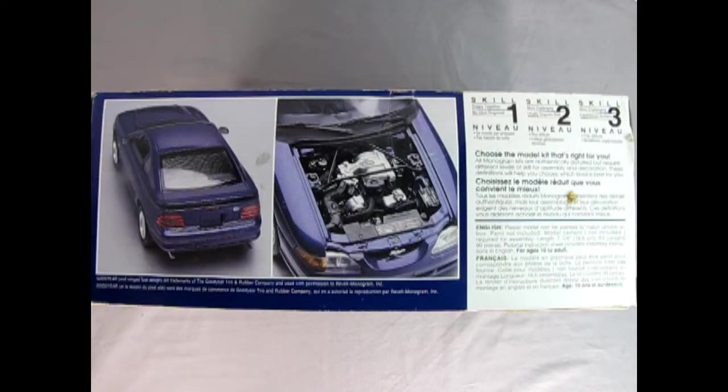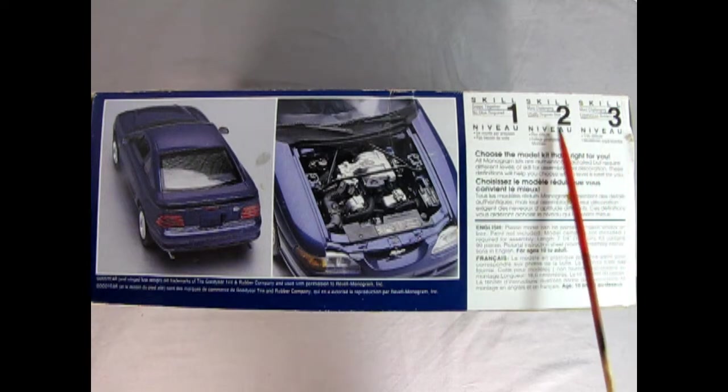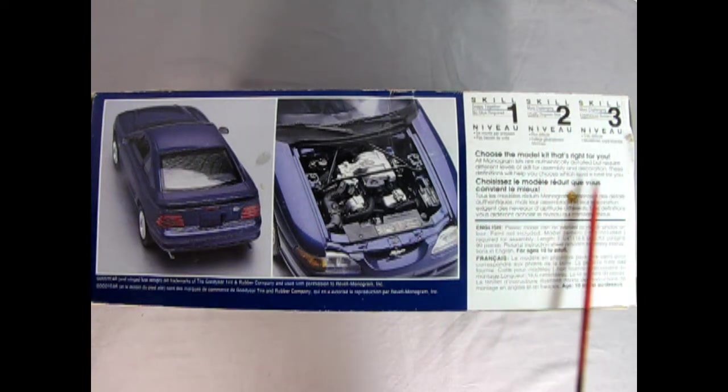On this side of the box we get the wonderful rear three-quarter shot of our model as well as the under hood details. Here you can see a lot of the decals used in the kit and that nice plenum. And then here we've got the skill level. This is a skill level 2 kit.